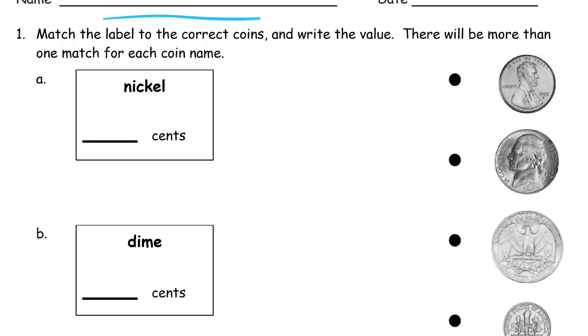There'll be more than one match for each coin name. So a nickel — figure out how much a nickel is worth. If you might remember, it's 5 cents.